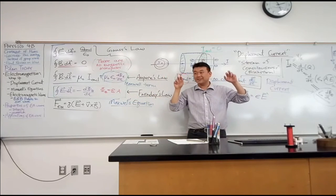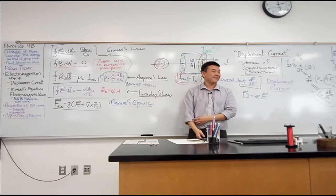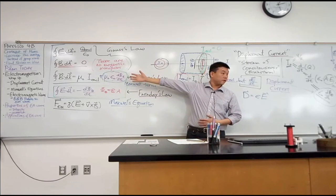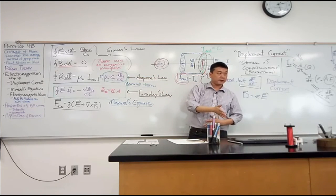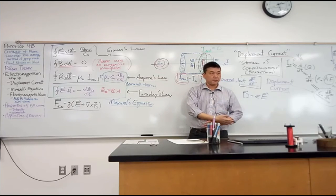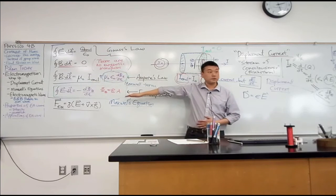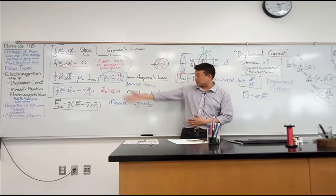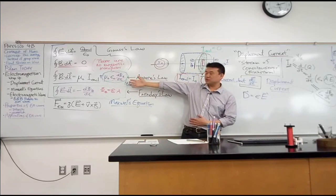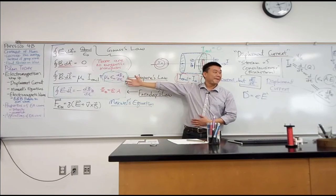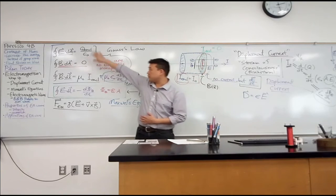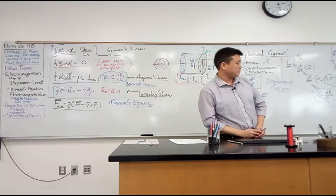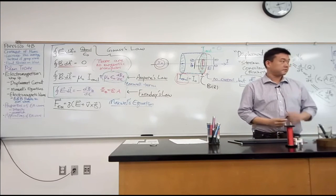Then someone with the right amount of time to think might ask: if a changing magnetic field can generate electric field, can the reverse happen — can a changing electric field generate magnetic field? Up until this point your answer was no. But the Maxwell term is saying yes: a changing electric field will generate magnetic field. So the entirety of Maxwell's equations is about this back and forth — what is the connection between electricity and magnetism? This closes the loop, and this is the last set of relationships.